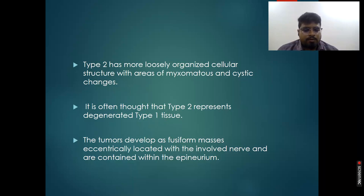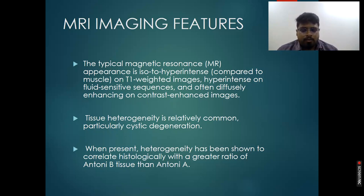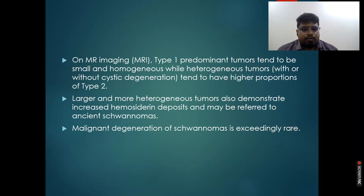These tumors develop as fusiform masses eccentrically located within the nerve and are contained within the epineurium. On MRI, they are isointense to hyperintense on T1-weighted images and hyperintense on fluid-sensitive sequences, and often diffusely enhancing on contrast-enhanced images. Tissue heterogeneity is relatively common, particularly cystic degeneration, which correlates histologically more with Antoni type B than type A. Type A tumors tend to be small and homogeneous, whereas type B tend to be heterogeneous. Larger and more heterogeneous tumors may also demonstrate increased hemosiderin deposits and may be referred to as ancient schwannomas. Malignant degeneration of schwannomas is extremely rare.